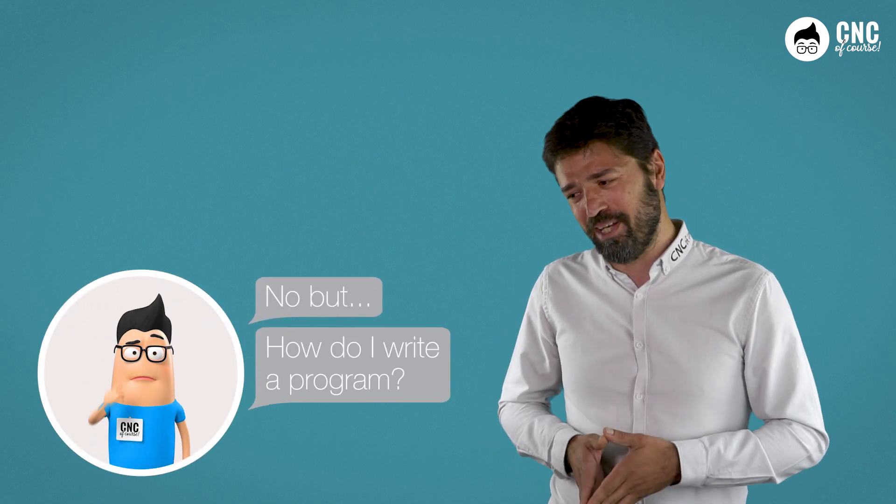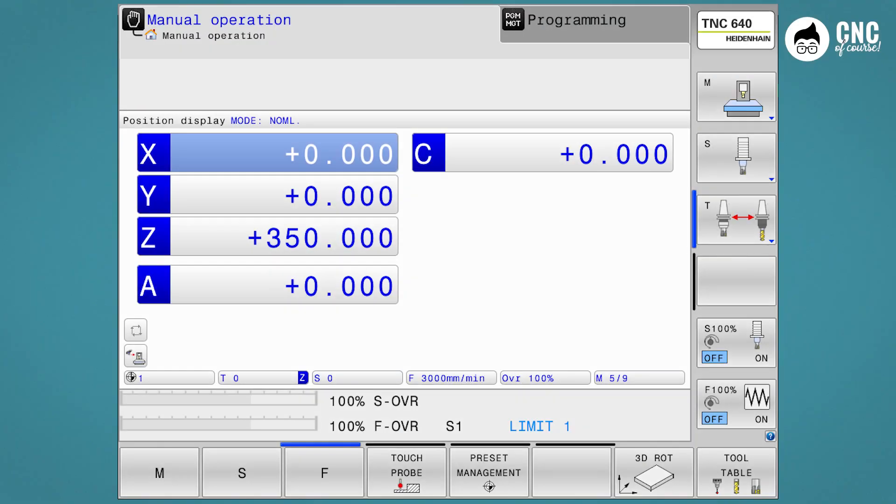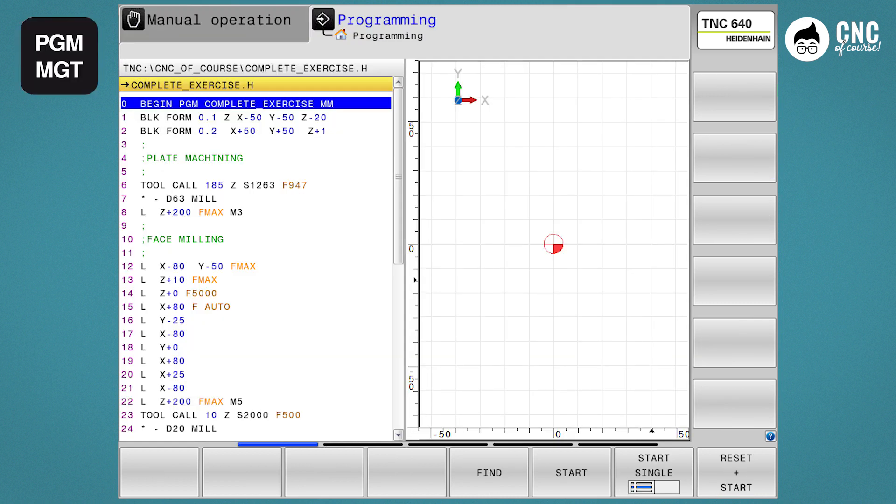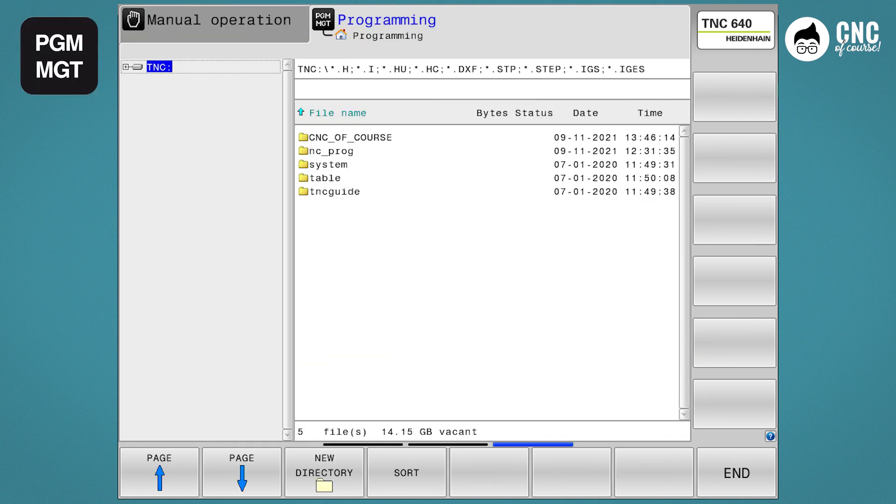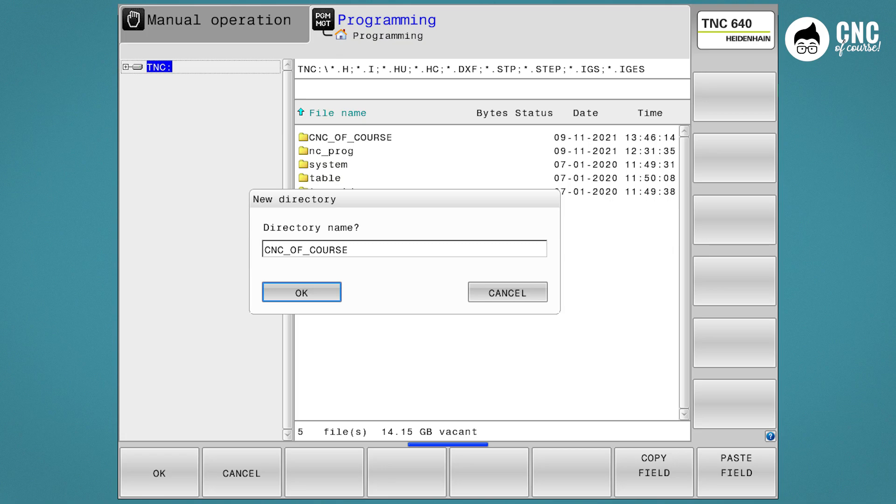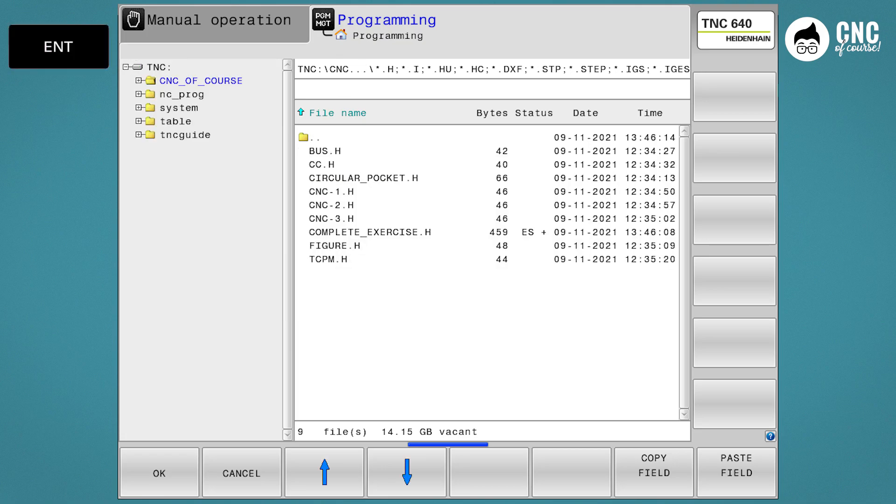Are you getting bored, Paolo? Yes, you're right. Now let's see how to start a new program. So we start our simulator, go to editing, then PGM MGT, which is program management, and with the arrows on the keyboard, we position ourselves on the left in the area where we have the directories. Go to TNC, select the soft key new directory that we will call CNC of course. At this point, we confirm with Enter and we have created our folder inside the TNC.